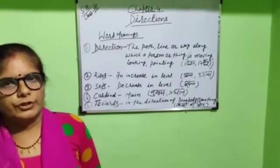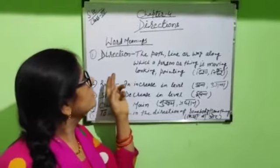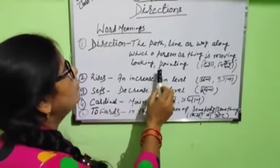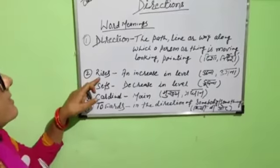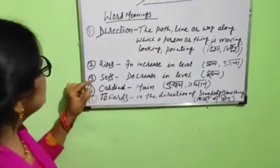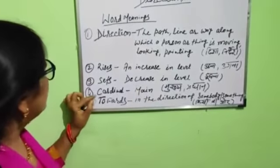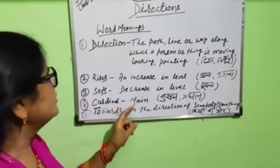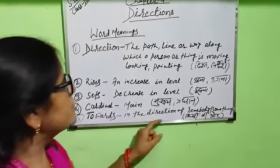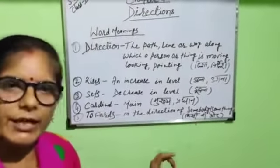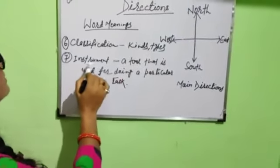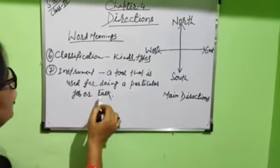We will do the word meanings. First: Direction — the path, light or way around which a person or thing is moving, looking, or pointing. Second: Rises — an increase in level, means ubna. Third: Sets — decrease in level, means doona. Fourth: Cardinal — cardinal direction means main direction, mukhiya. Fifth: Towards — in the direction of somebody or something, means kisi ki or. Sixth: Classification — kinds or types. Seventh: Instrument — a tool that is used for doing a particular job or task.